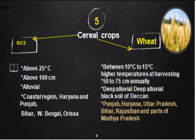Now we will discuss two major cereal or food crops: wheat and rice. The first and most important food crop of the country is rice. Geographically, rice requires high temperature — more than 25 degrees Celsius — and high humidity, with high rainfall above 100 centimeters annually. Alluvial soil is good for rice, and it is also grown in black soil regions.